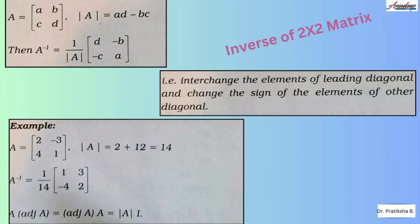Let us look at the problem on the screen. You have been given a 2x2 order matrix with elements 2, -3, 4, and 1. The determinant of A is 2×1 minus (-3×4), which is 2 plus 12, that is 14. To get A inverse directly, the formula gives 1 upon 14, and interchanging the leading diagonal elements (2 and 1) and changing the signs of the remaining elements, we get A inverse as (1/14) × [1, 3; -4, 2].